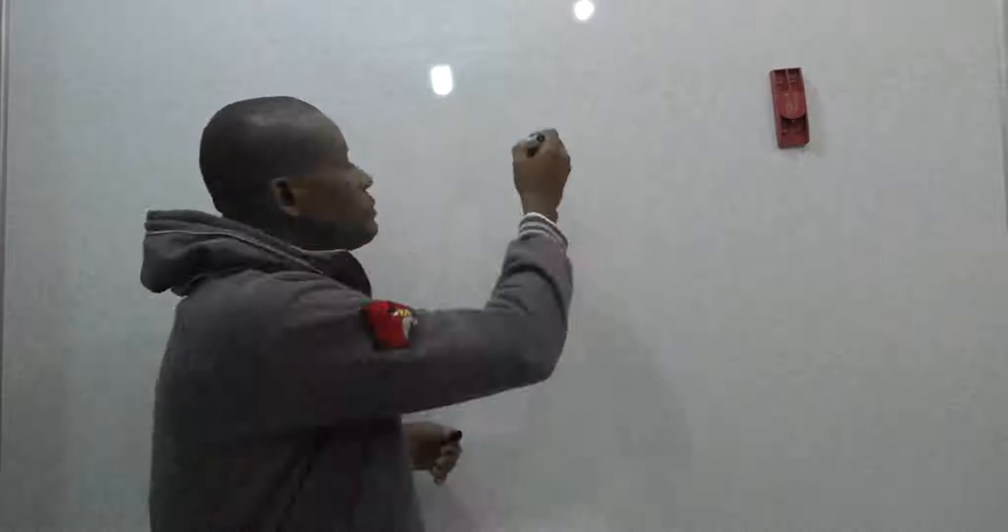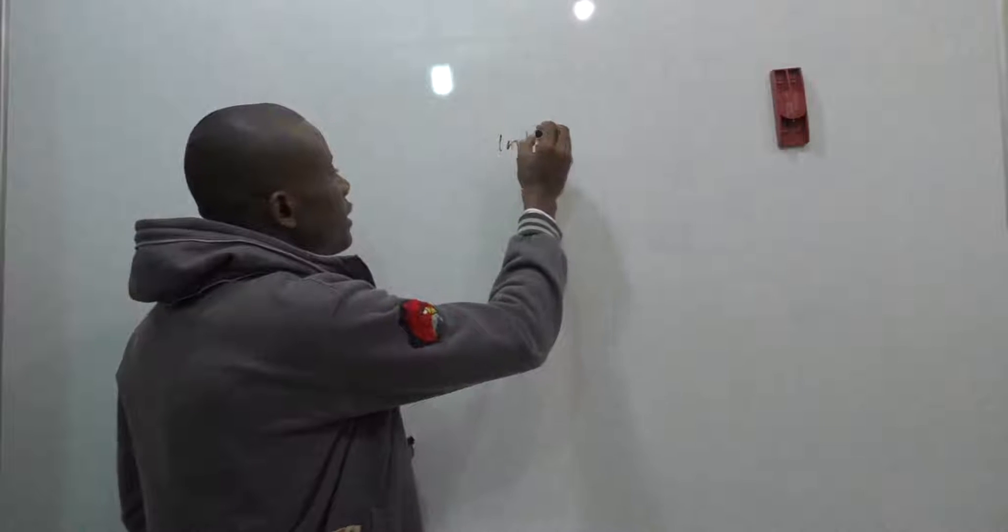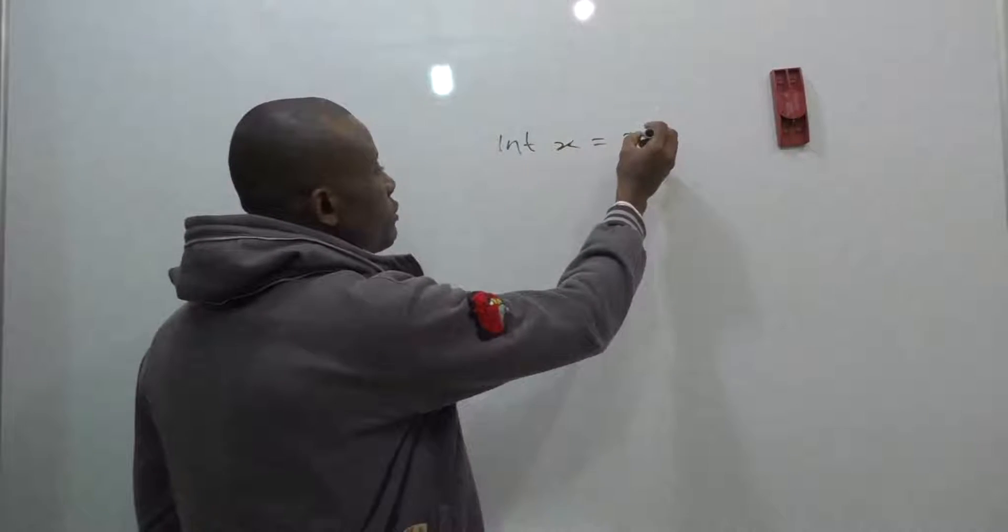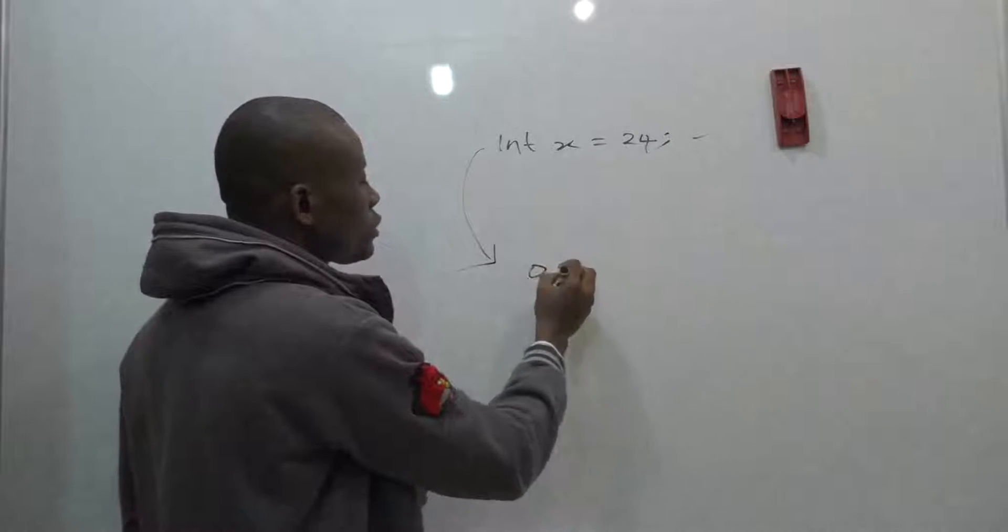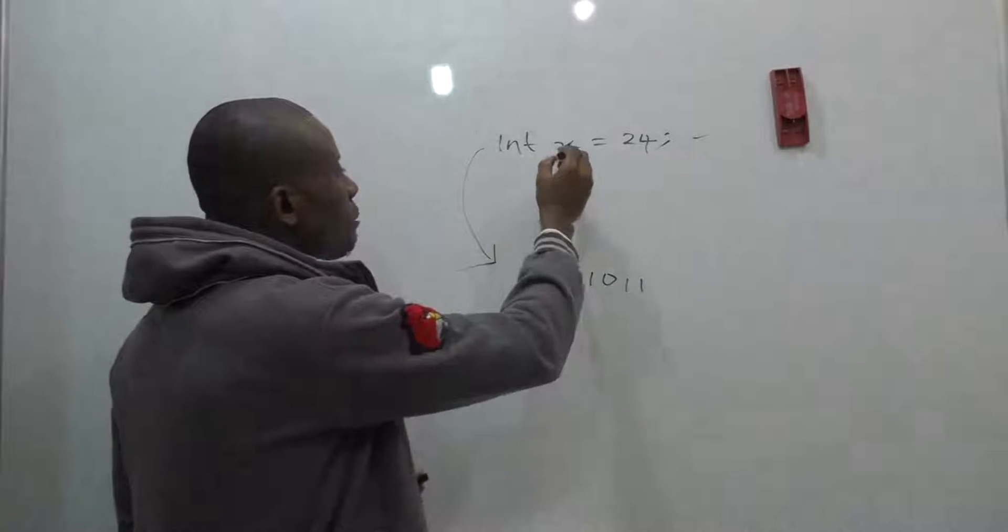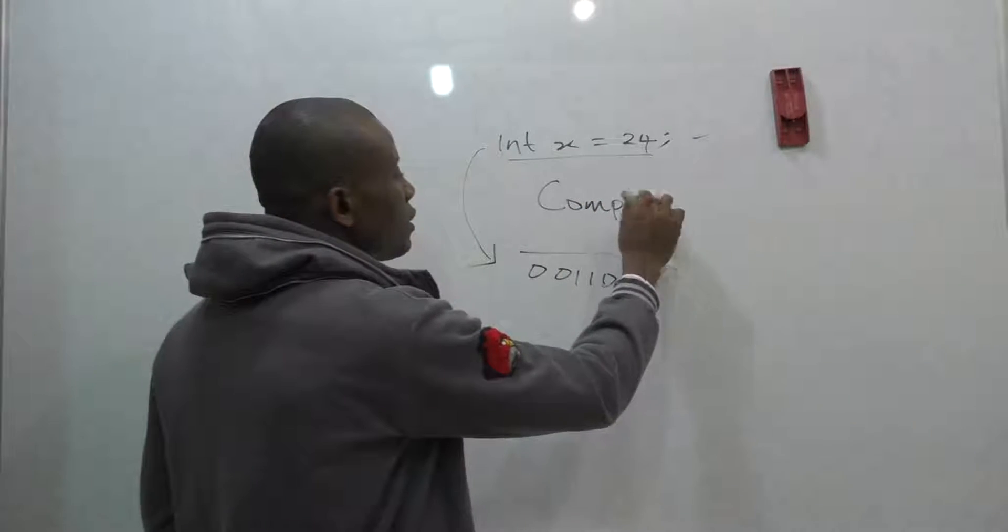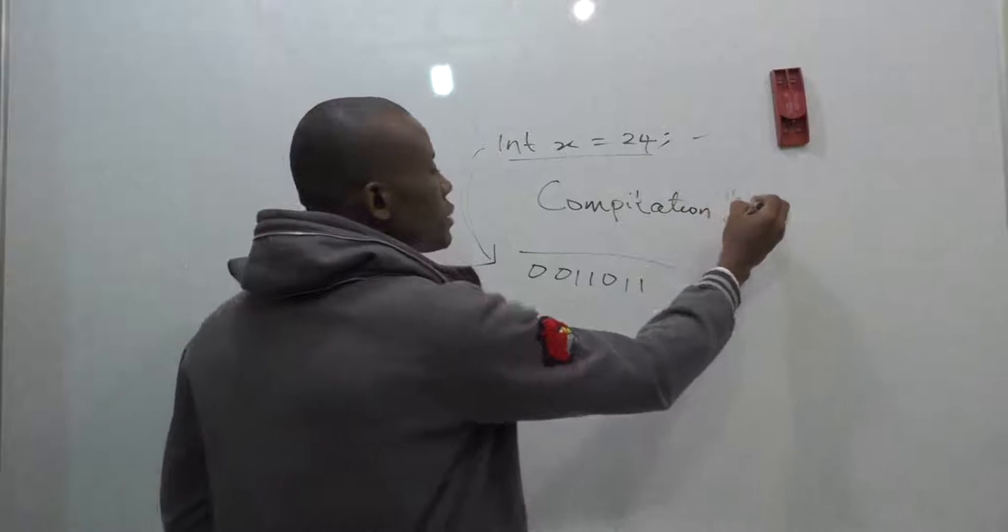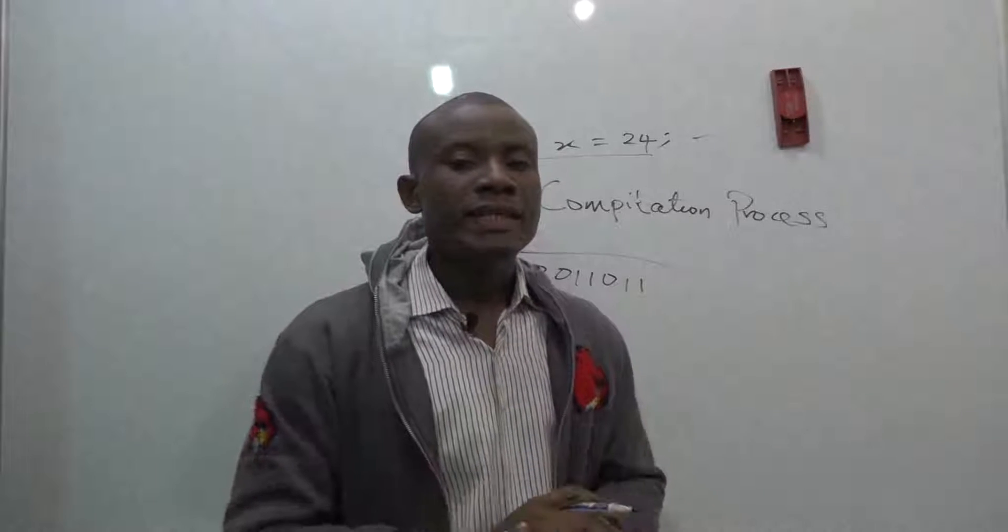Alright, the first thing I want to let you know is that a compiler, just as I mentioned in my previous course, converts a high level program written in high level language to a low level language. You have something like, let's say, you declare a variable integer x equals 24. How then do you convert it from this high level language to strings of zeros and ones? What happens in between this place and this place, and that is what we are going to discuss now and that is the compilation process.